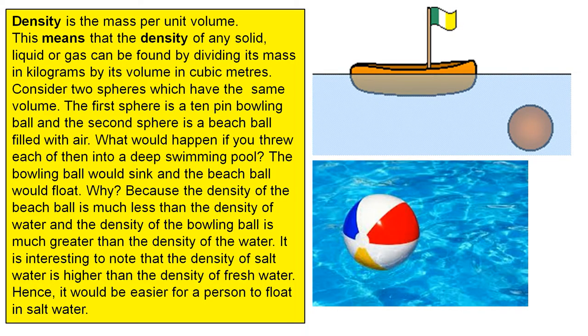Density is the mass per unit volume. This means that the density of any solid, liquid or gas can be found by dividing its mass in kilograms by its volume in cubic metres. Consider two spheres which have the same volume.